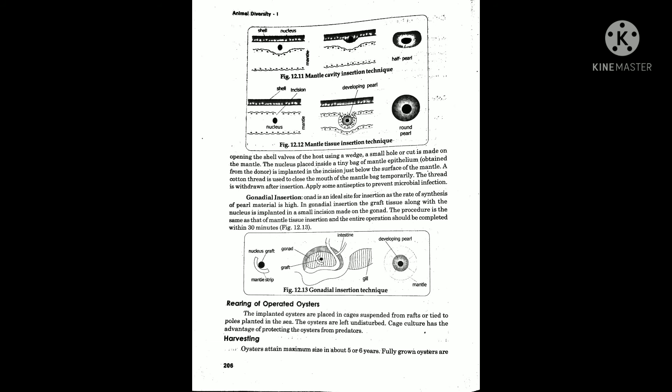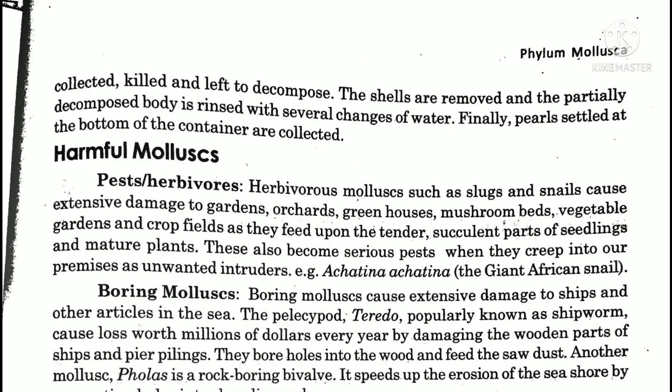After 5 to 6 years, the oysters are harvested. They are collected from the water, the shells are removed, and the pearls are extracted. The pearl oyster is decomposed, the shell is removed, and the pearl is collected. This is the complete process of pearl culture.